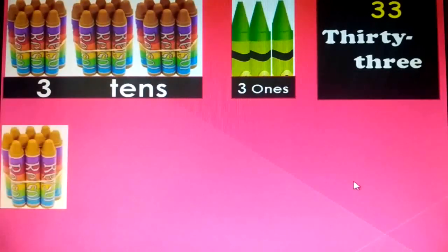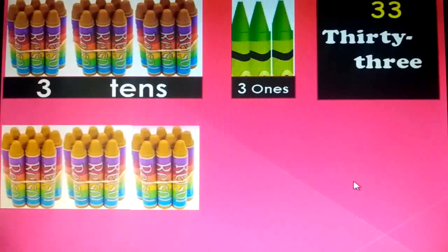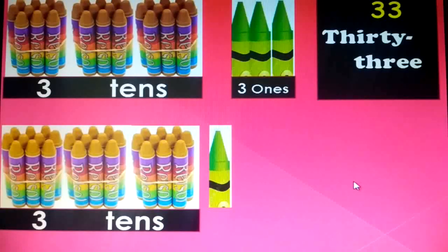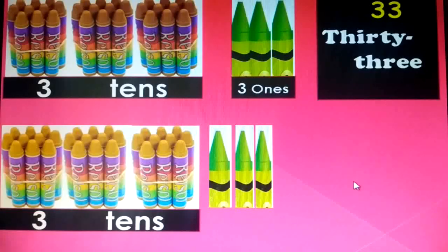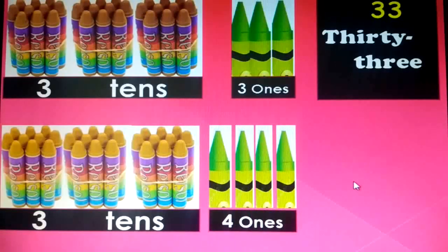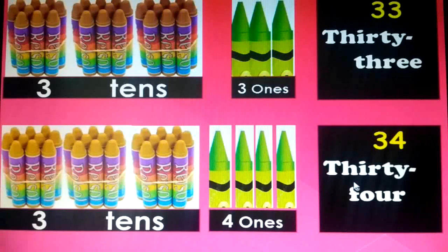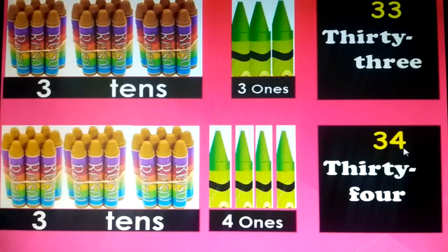Next, a bundle of 10 things means 1 ten, 2 tens, 3 tens, and 1, 2, 3, 4 — 4 ones. So 3 tens and 4 ones is equal to 34. T-H-I-R-T-Y, 30, dash, F-O-U-R, 4. Thirty-four.